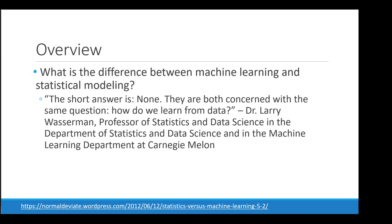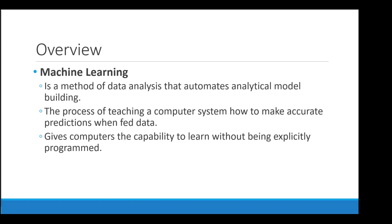Machine learning is a method of data analysis that automates analytical model building. It's the process of teaching a computer system how to make accurate predictions when fed data — it gives computers the capability to learn without being explicitly programmed.